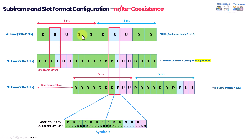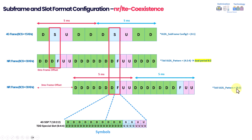For the NR-LTE TDD coexistence solution: the 4G pattern is 3-2-1 repeating every five milliseconds. By giving the 5G NR frame a three millisecond offset, the 5G frame aligns exactly with the 4G. Since 5G is using 30 kHz SCS versus 4G's 15 kHz SCS, within one subframe you have 20 slots in 5G. Each 4G subframe is equivalent to two 5G slots, so downlink aligns with downlink and uplink aligns with uplink.